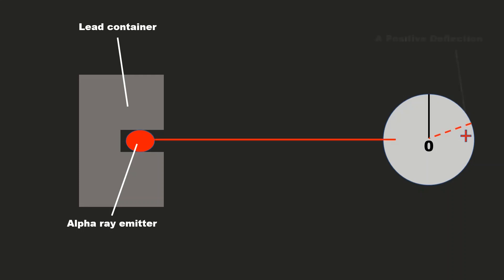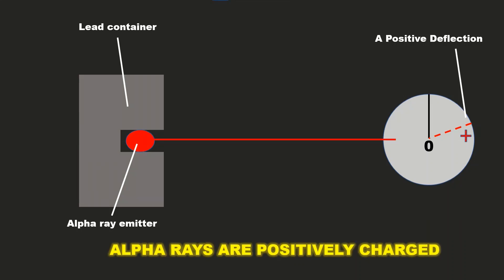The Geiger counter deflects to the right if it has a positive charge. In this case, alpha particles hit the Geiger counter, a deflection was observed. This shows that alpha rays are positively charged.